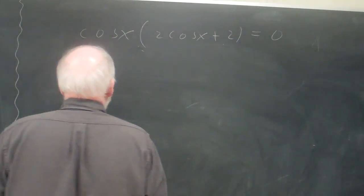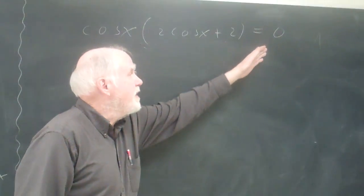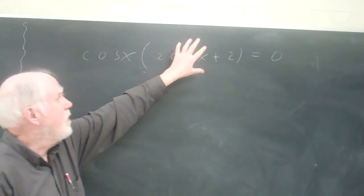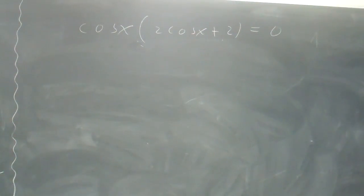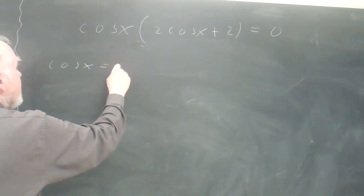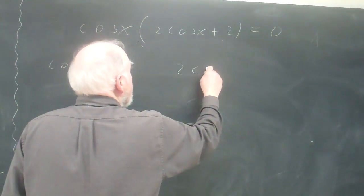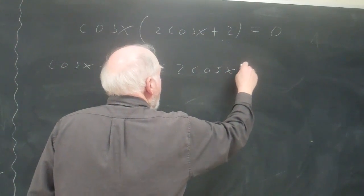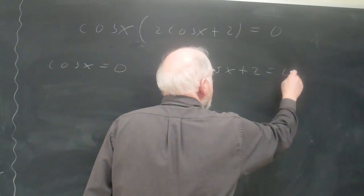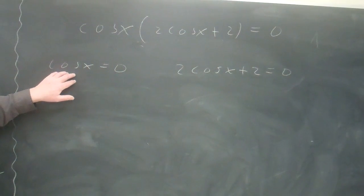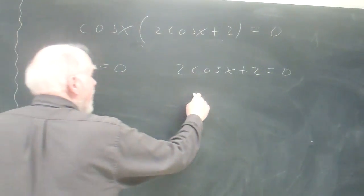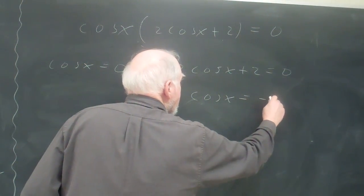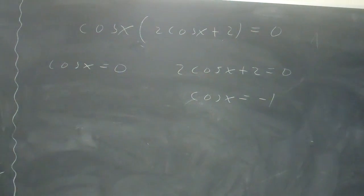Now we're getting close. I can use, if you have something times something equals zero, then I can set this to zero or this to zero by the zero product theorem. So I'll set cosine x equals zero, and I'll set two cosine x plus two equals zero. Now, this is in good shape. This is a simple little trig equation, which we've done many times before. And all I have to do is solve for the cosine x, and I'll get cosine x equals negative one.